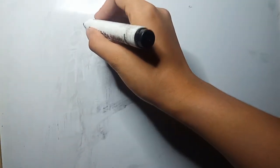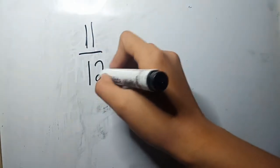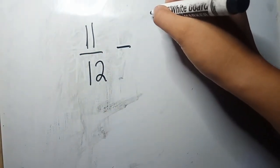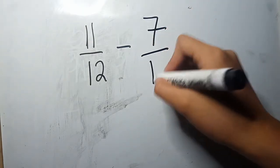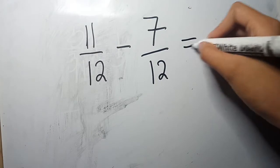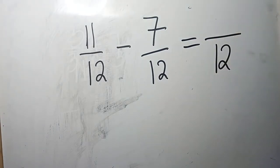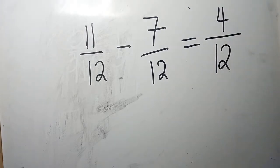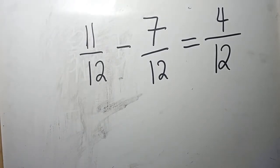The same rule applies when we subtract similar fractions. For example, 11 over 12 minus 7 over 12. We will just copy the common denominator, which is 12, then subtract the numerators. 11 minus 7 gives us 4. The difference can still be simplified. Both 4 and 12 are divisible by 2, so we can simplify 4 and 12 by dividing them by 2.